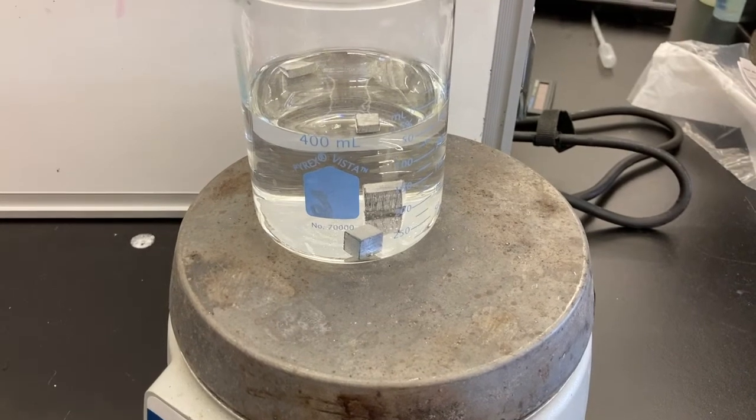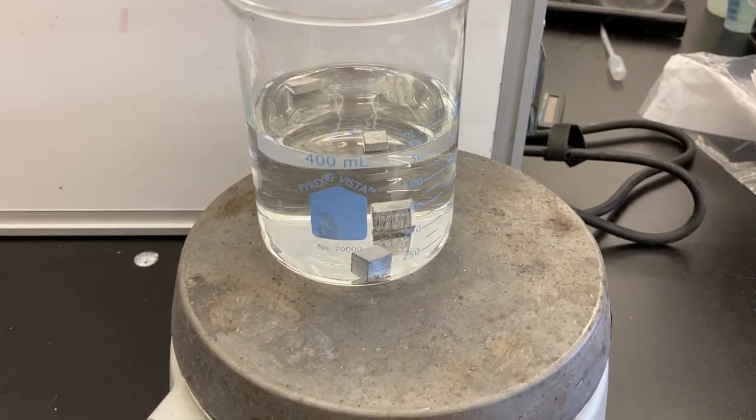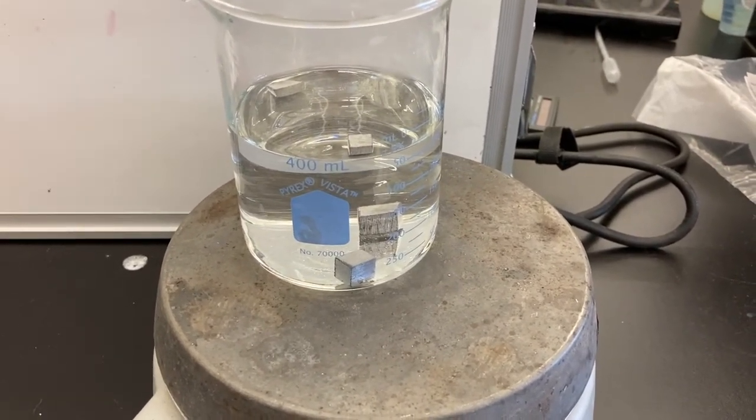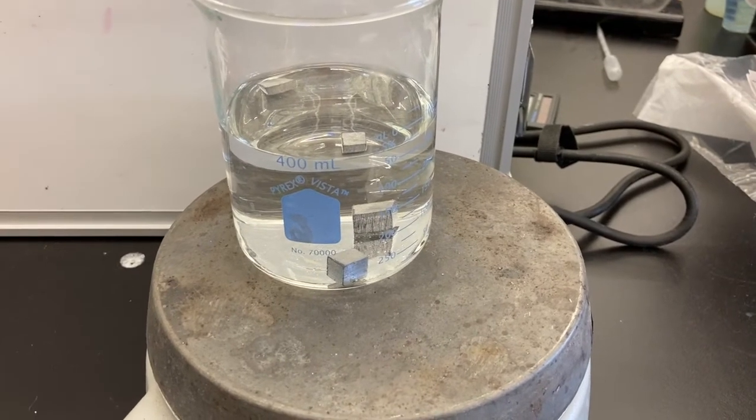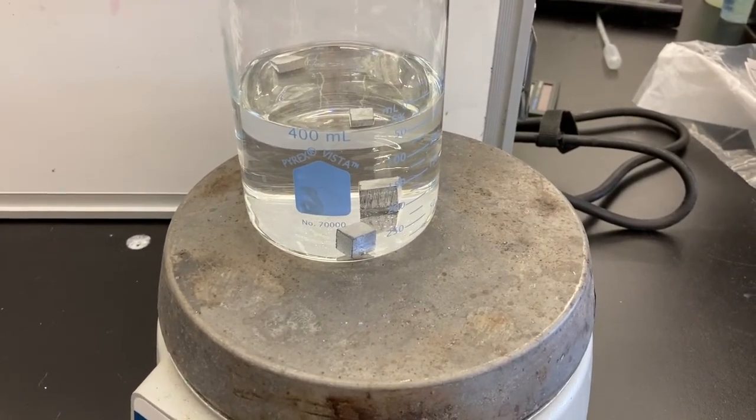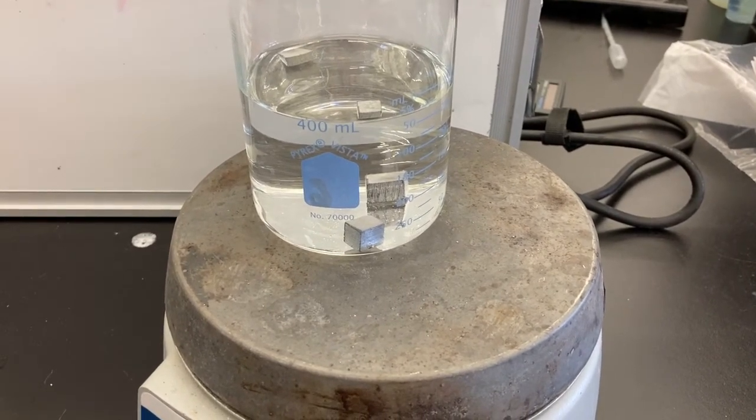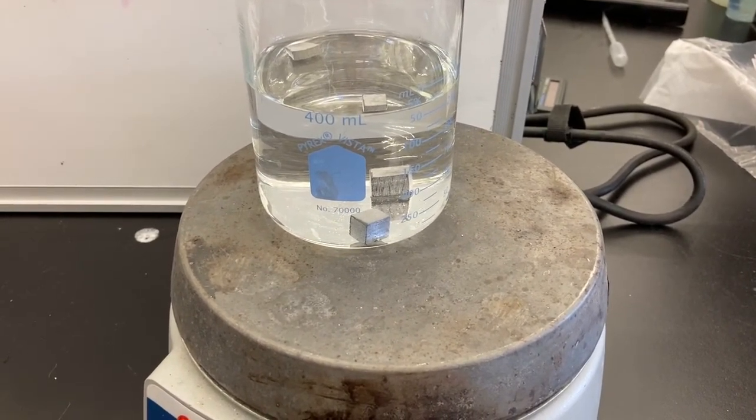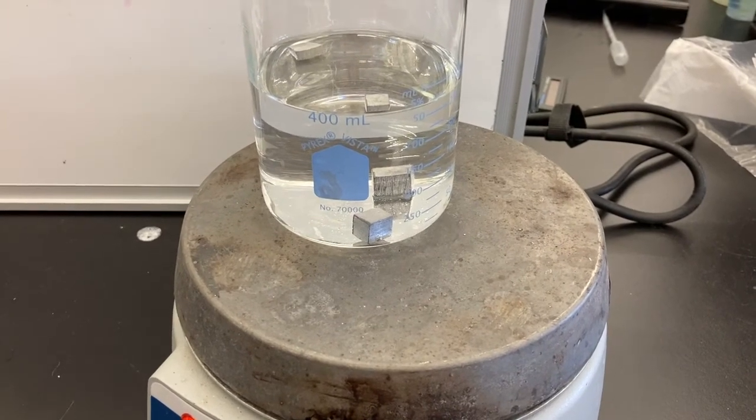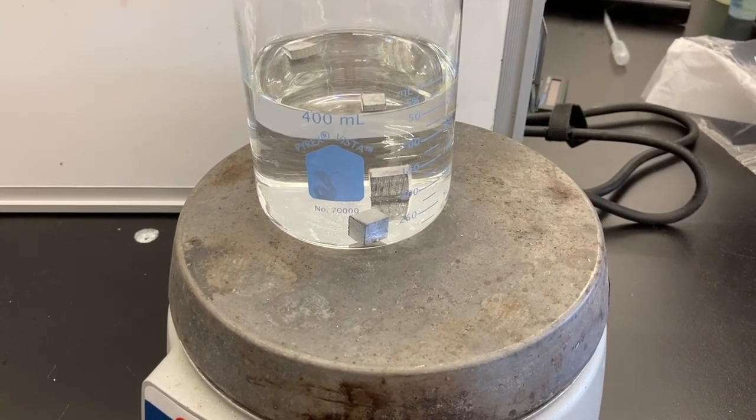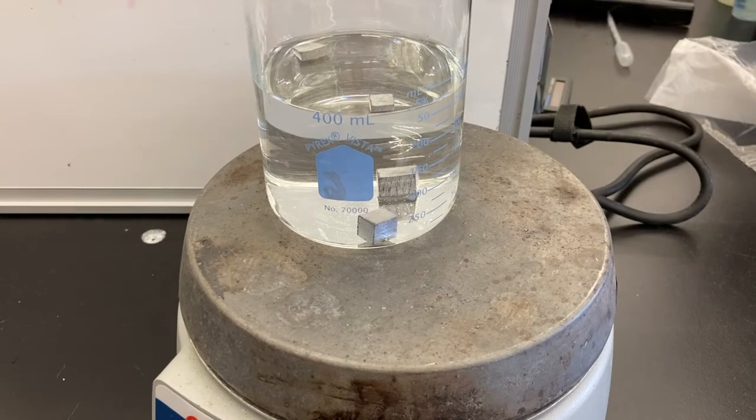After you have filled your 400 milliliter beaker about halfway full with water, this can be tap water, you can add your metal pieces. Now if you want to add both at the same time, you need to keep track of which one is which so that you know which mass goes with which piece. You can always re-weigh them after you do your experiment as well if you are uncertain.